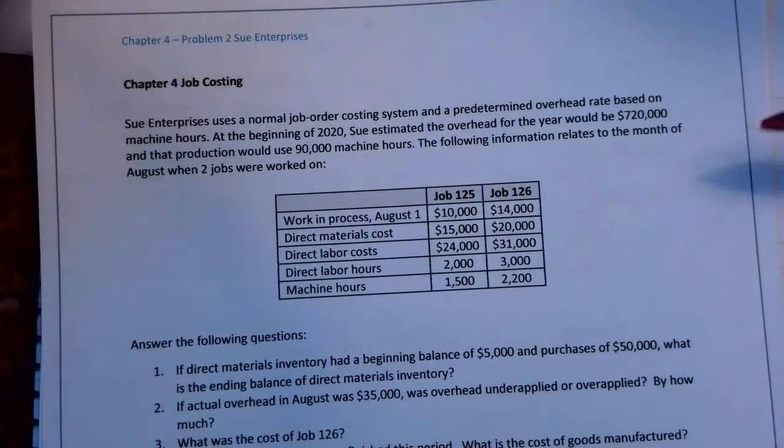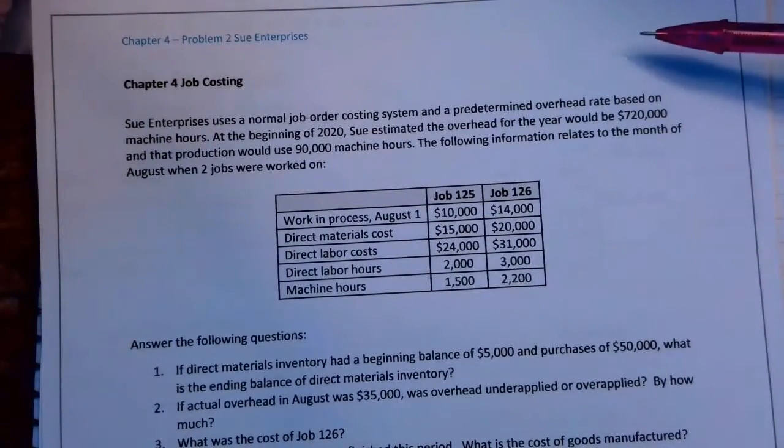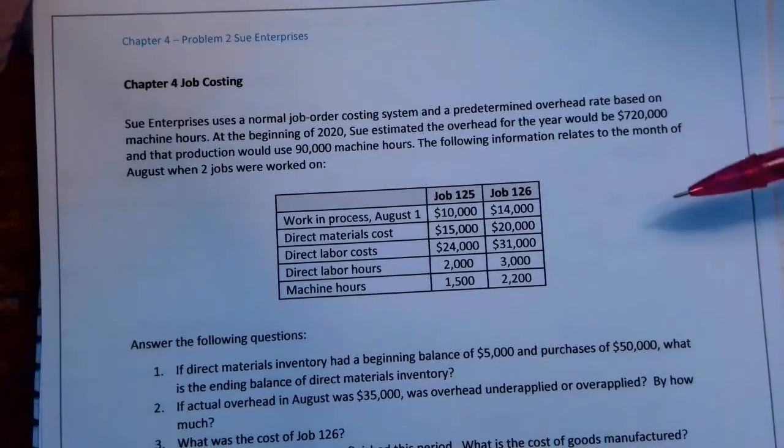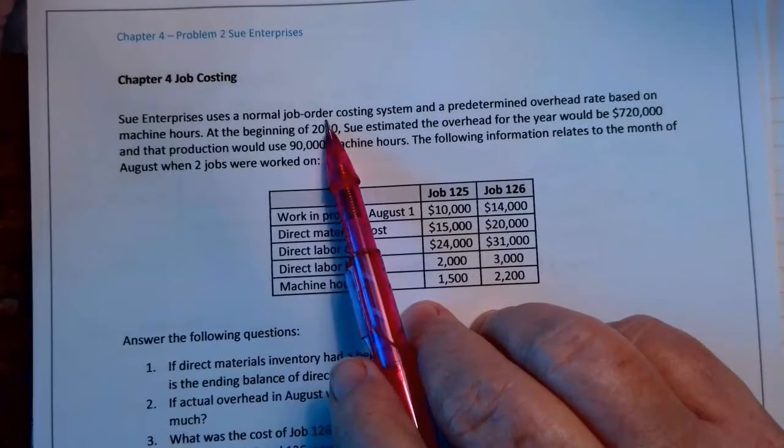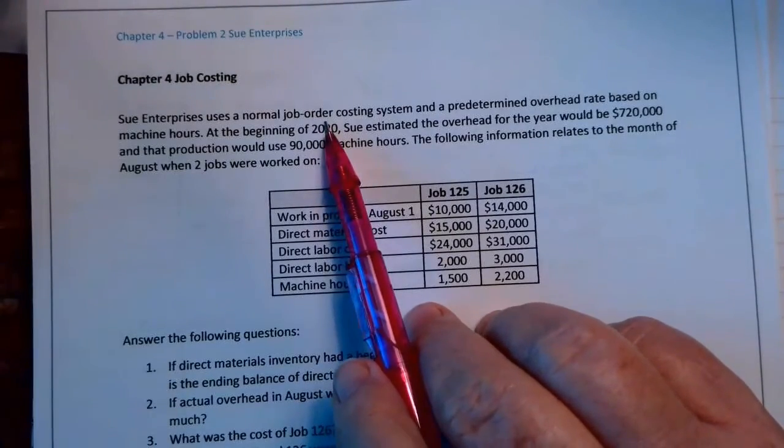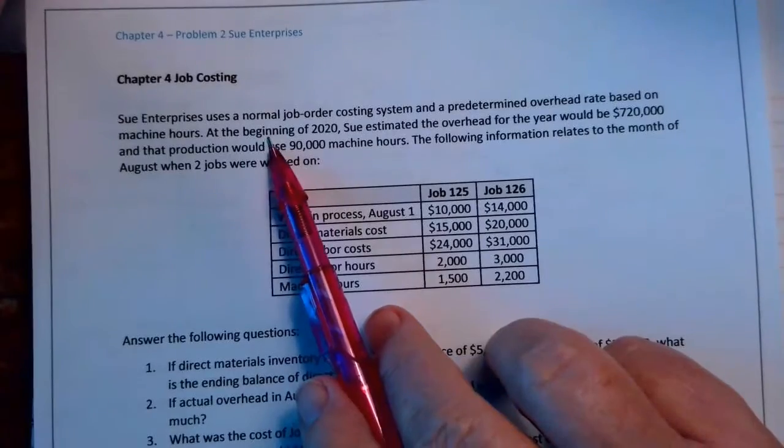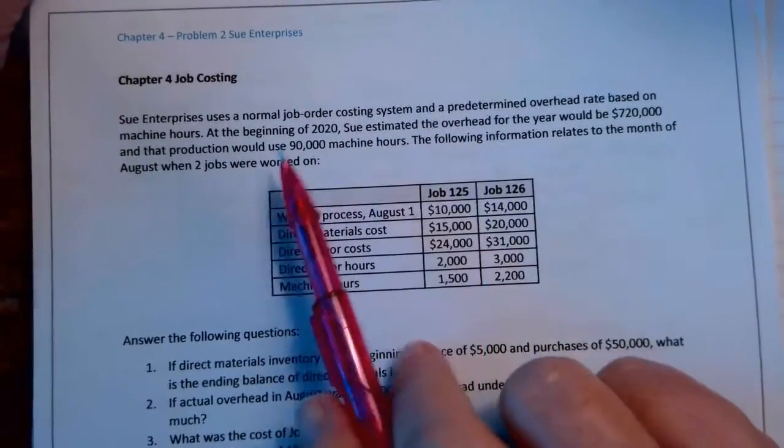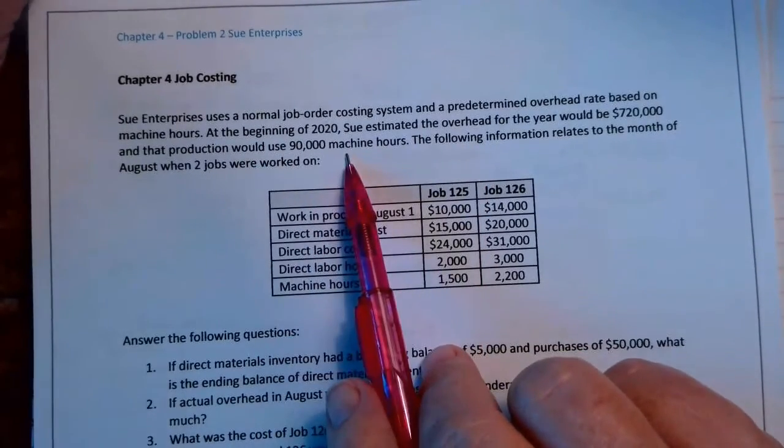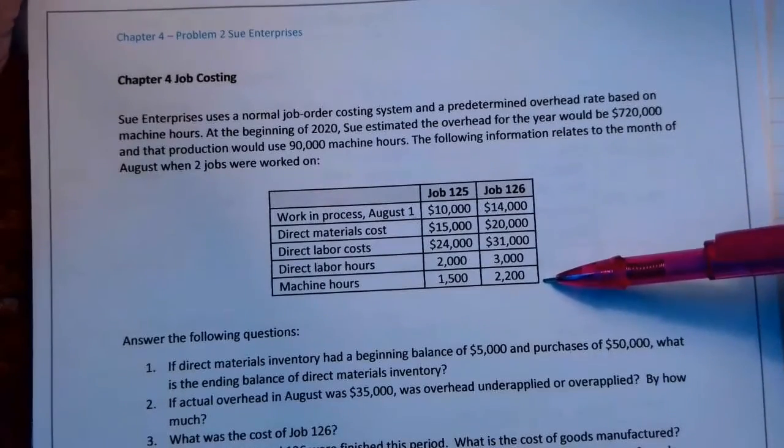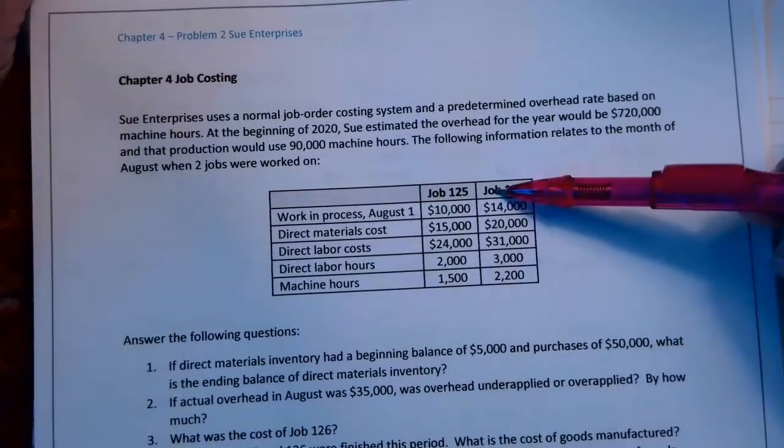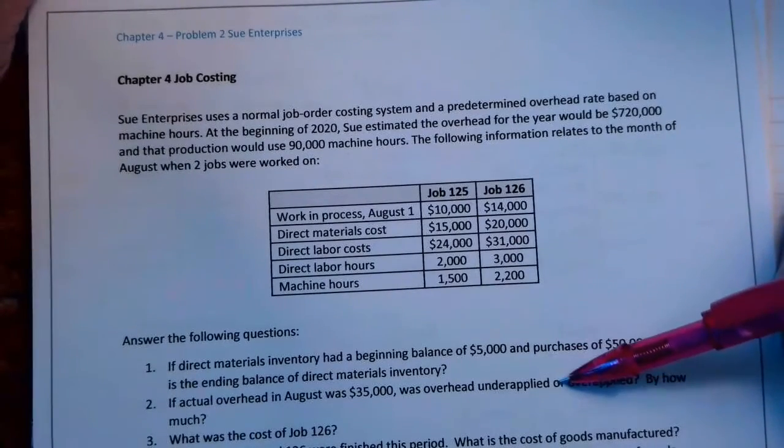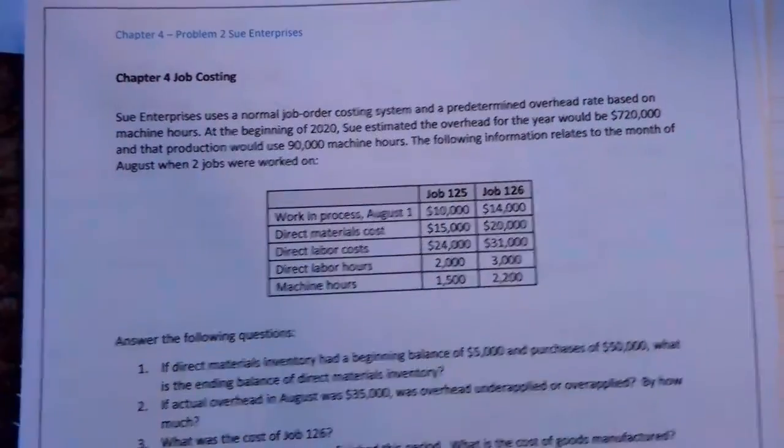Okay, more cost problems. This is Problem 2, Sue Enterprises, for Chapter 4. She uses a normal job order costing system, which means we're not going to use actual costs in overhead, and a predetermined overhead rate based on machine hours. Estimated overhead would be $720,000 and production would use 90,000 machine hours. She gave us information on two separate jobs. When I see this and glance over the questions, I think what I would do is set up T-accounts for this one, for each job.